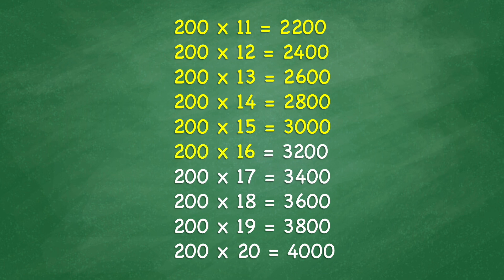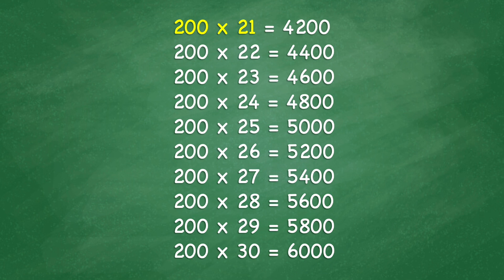200 times 16 equals 3,200. 200 times 17 equals 3,400. 200 times 18 equals 3,600. 200 times 19 equals 3,800. 200 times 20 equals 4,200. 200 times 22 equals 4,400. 200 times 23 equals 4,600. 200 times 24 equals 4,800.